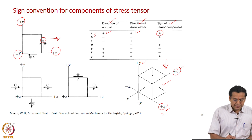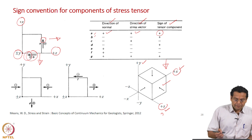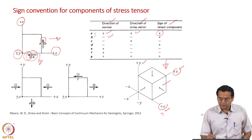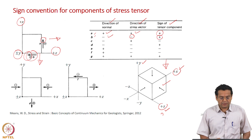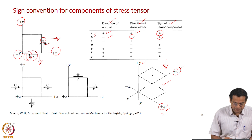Let us take case B. On this side, the normal to this face is along the negative x-axis and the direction of the force is along the negative z-axis. So, the direction of normal is negative, direction of the force is also negative — once again the stress component is positive. Both are negative, resulting in a positive sign.